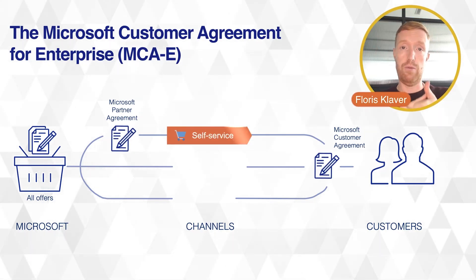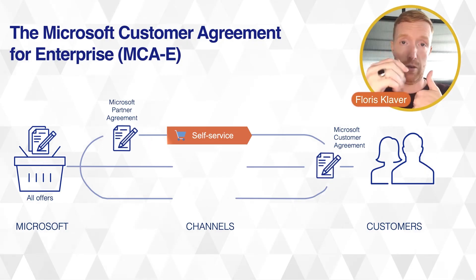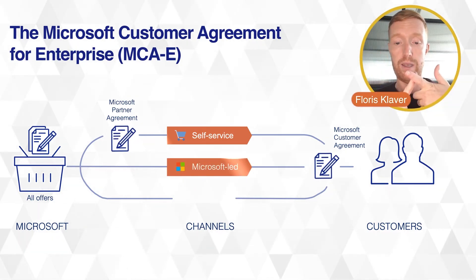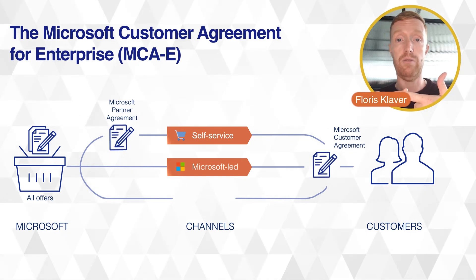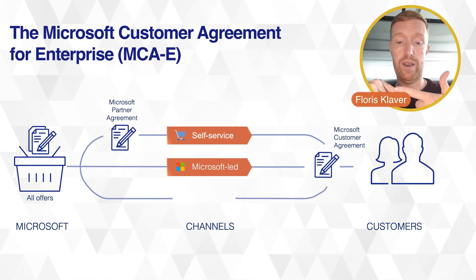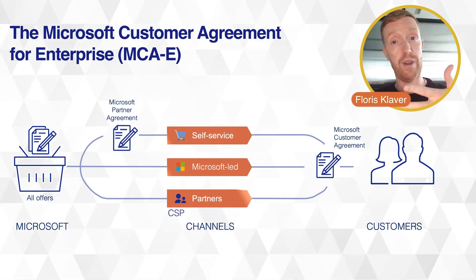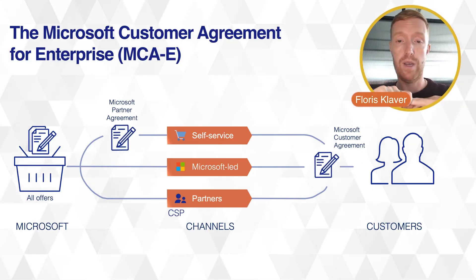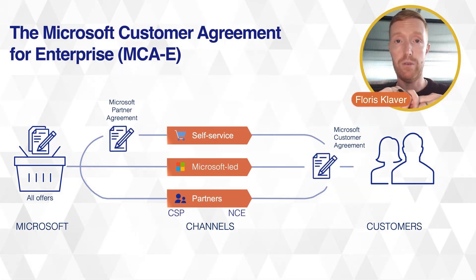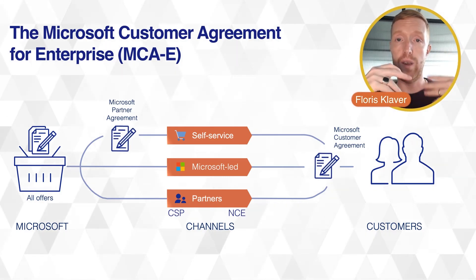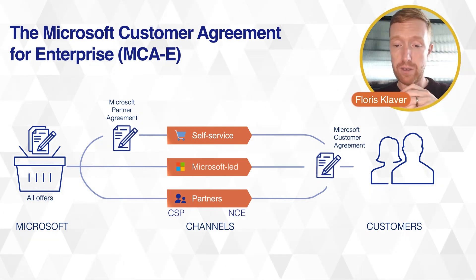Microsoft allows multiple purchasing channels. First, self-service through Microsoft's website — you purchase directly under your contract. Second, Microsoft customer-led, meaning directly from a Microsoft sales representative with a direct billing and invoicing relationship. And lastly, through partners — notably through the Cloud Solution Provider program and next-generation volume licensing (NCE). The NCE contract is already built on the Microsoft Customer Agreement stack, so if you're already purchasing through CSP, you're already familiar with the MCA.